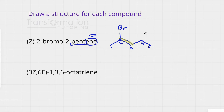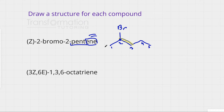Let's start with carbon number two. Close off the right part of the molecule and focus on carbon two. Carbon two is attached to bromine and carbon. We go atom by atom and circle the atom with the highest atomic number according to the periodic table. Here we have a difference right away — bromine versus carbon. Bromine has a higher atomic number, so I circle it.